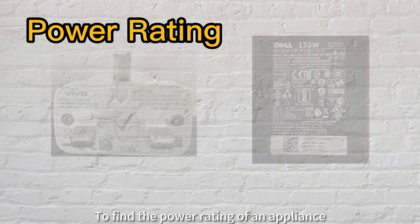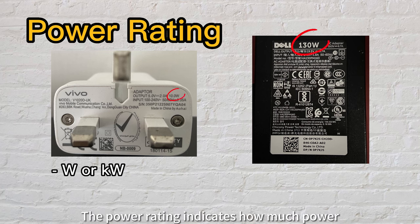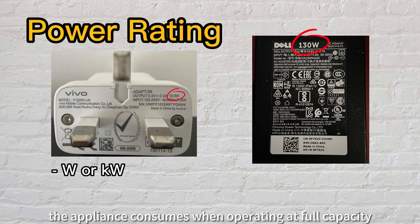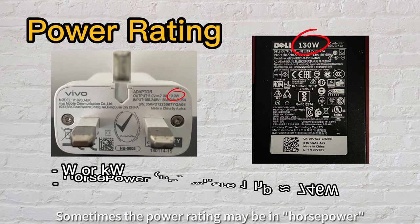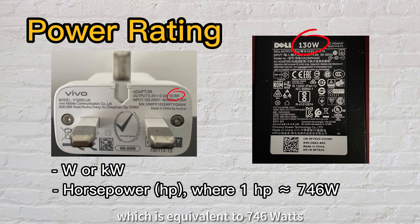To find the power rating of an appliance, simply check the label, which typically shows the rating in watts or kilowatts. The power rating indicates how much power the appliance consumes when operating at full capacity. Sometimes, the power rating may be in horsepower, which is equivalent to 746 watts.